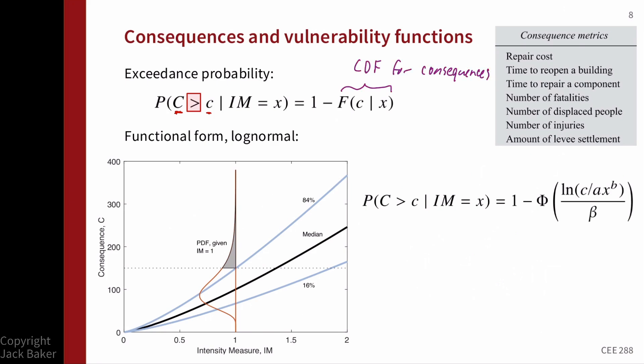The question is how to write down an equation for those consequences, and there are lots of different ways to do this. Unlike fragility functions, which are almost always log-normal CDFs, consequence models vary quite widely. One common model — used particularly for predicting displacements in a building — is: the consequence given IM equals x is equal to ax^b times epsilon, where ax^b gives a nonlinear function of the IM value and epsilon is a random variable representing uncertainty.